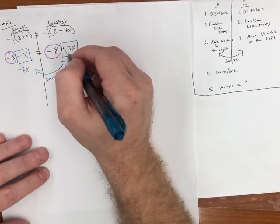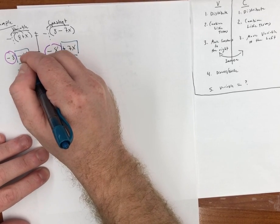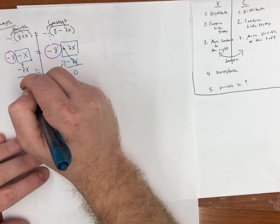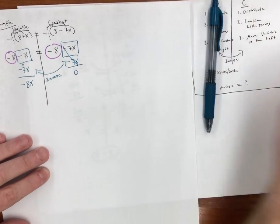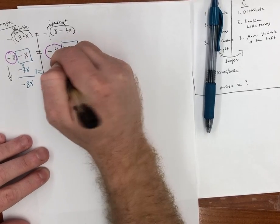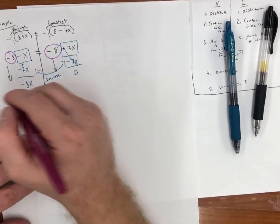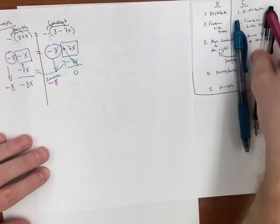Remember, variables can only go with variables. So I have a negative minus a negative, which means you're just adding the 2. 1 plus 7 is going to give me a negative 8x. So now let's go ahead and bring down the rest of this stuff. I'm going to have a negative 8, minus 8, and then equals.